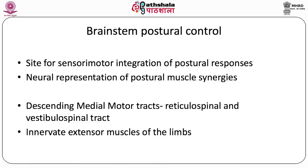Alpha and gamma motor neurons at the spinal cord level are innervated by descending motor tracts arising from the brainstem and cerebral cortex. These tracts are classified into medial and lateral descending motor tracts. The medial tracts are involved in postural control; there are two major ones: the reticulospinal tract and the vestibulospinal tract. The vestibulospinal tract arises from the vestibular nucleus. The reticulospinal tract is divided into the pontine reticulospinal tract (excitatory) and the medullary reticulospinal tract (inhibitory).